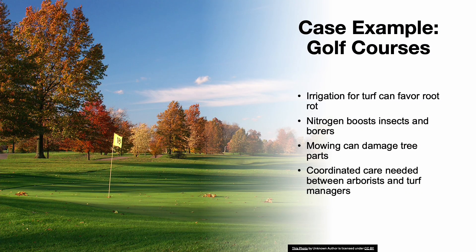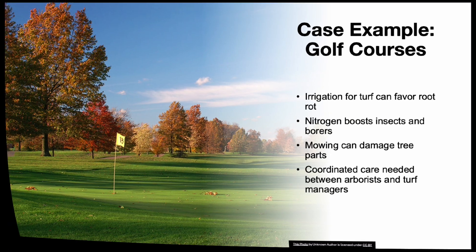Take a golf course, for example. Trees and turf share the same space, but they often have conflicting needs. Turf irrigation can lead to root rot in trees. Too much nitrogen can boost pests. Mowers can damage trunks and roots. So it's critical for arborists and turf managers to collaborate on maintenance practices that support the whole landscape.